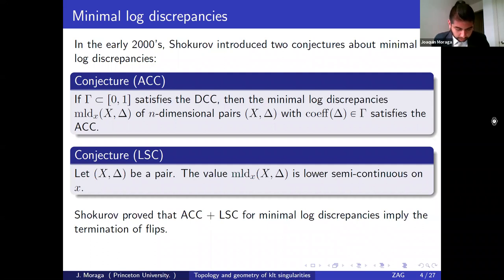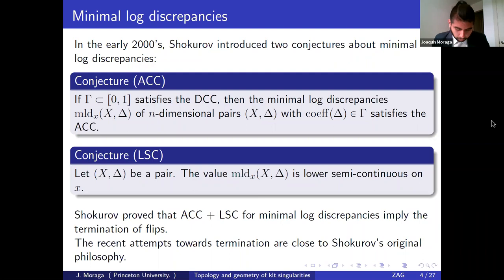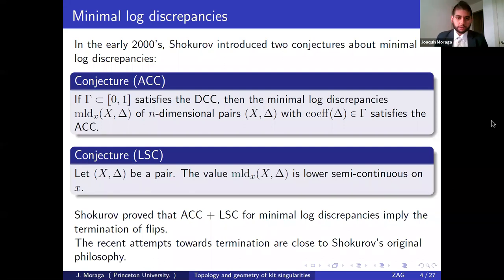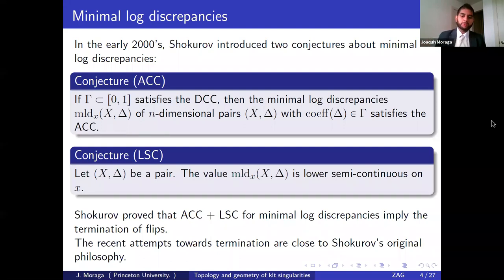Let's see some results towards these conjectures. There have been some recent results related to termination of flips, most of which are close to Shokurov's original philosophy. Essentially, instead of using ACC for minimal log discrepancies, you replace it with a theorem we know — for instance, ACC for log canonical thresholds — and instead of lower semi-continuity, you use some analog, then mimic Shokurov's approach.